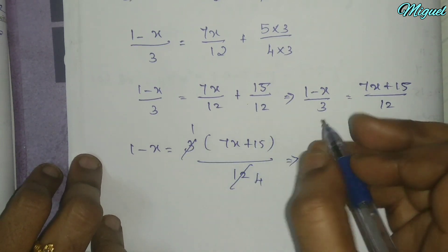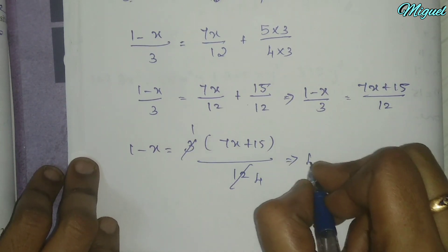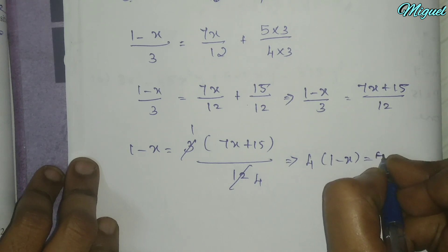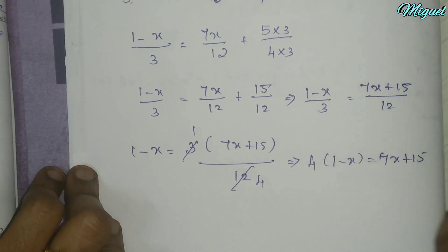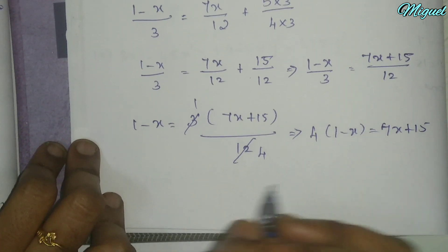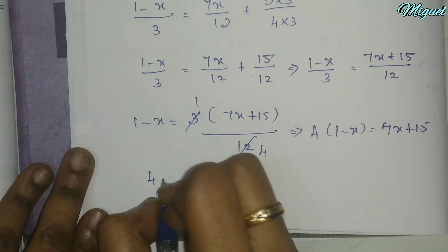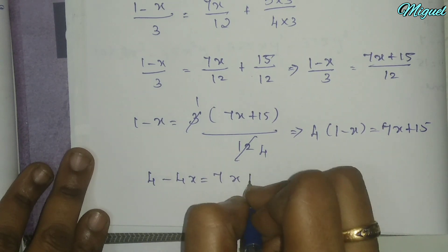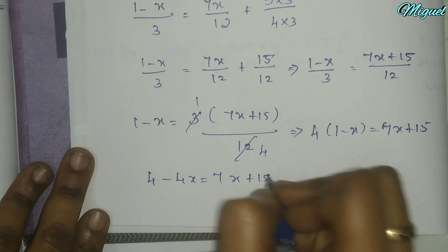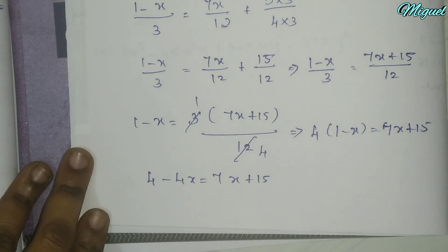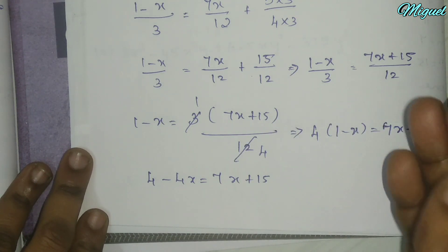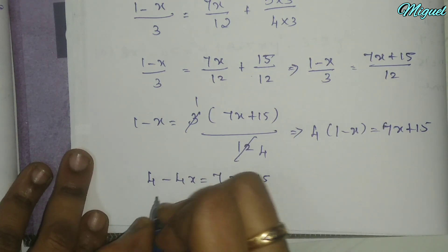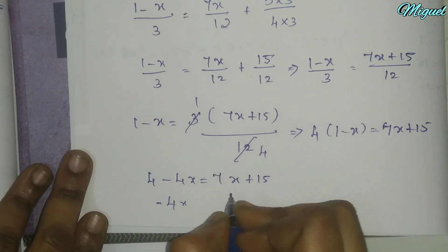Cross multiplying, 4 into (1 minus x) equals 7x plus 15. Expanding: 4 minus 4x equals 7x plus 15. Now we move the variables to one side: minus 4x.